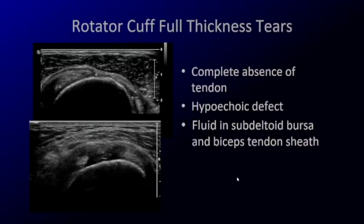Rotator cuff tears can be divided into full thickness tears — affecting the entire thickness from external to internal of the tendon — or partial thickness. If you're doing your layer inventory, you'll see a layer missing where you have that tear. The tear may be complete, and you may see hypoechoic or anechoic fluid within that gap.